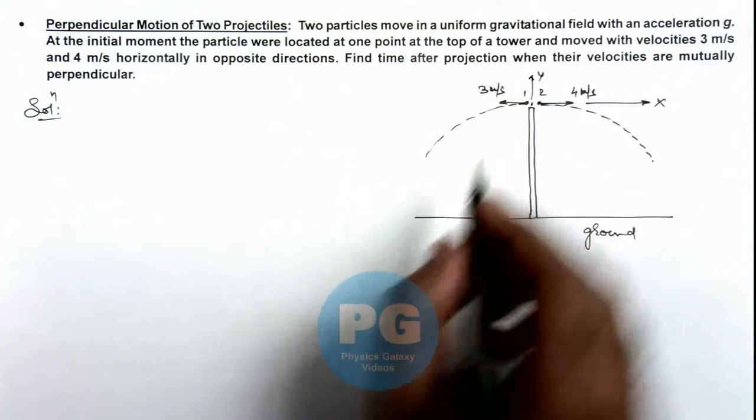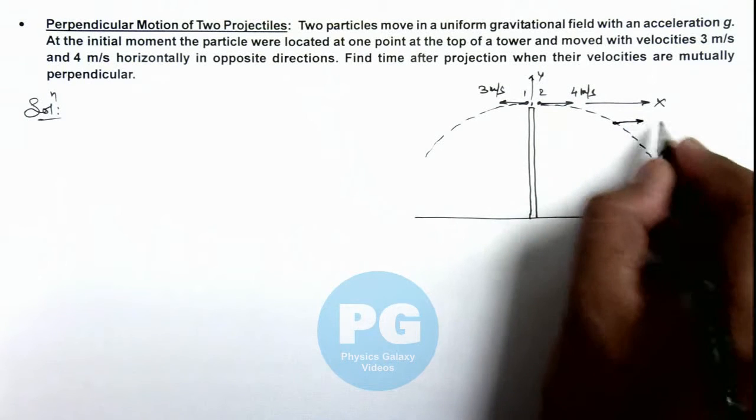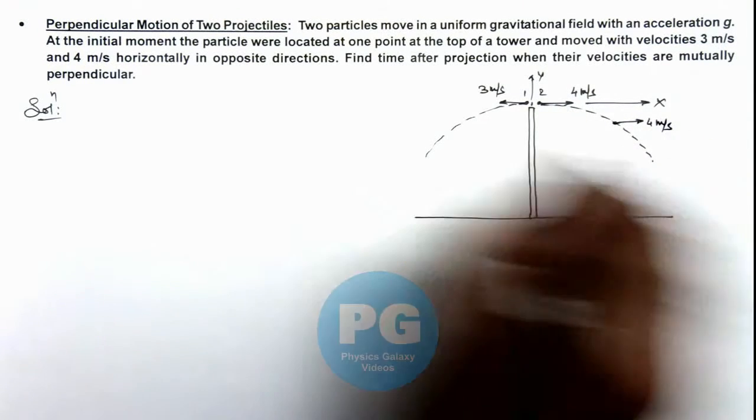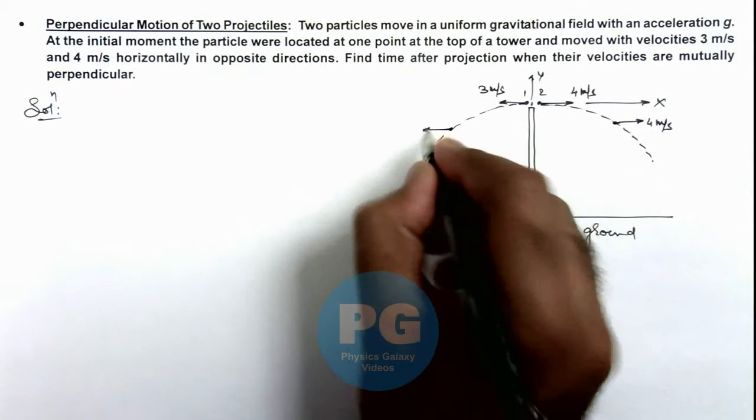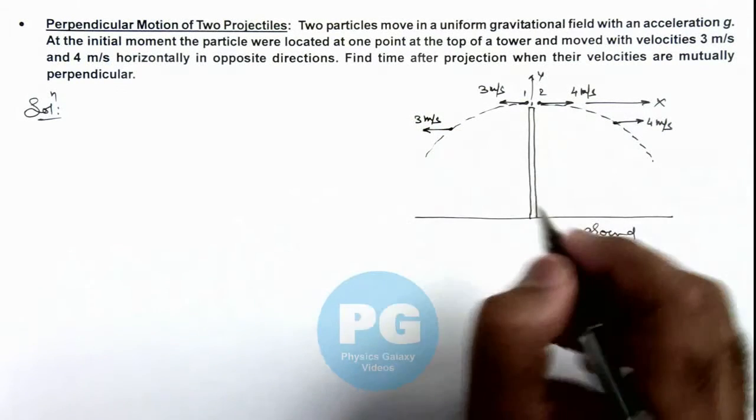Here we can see at all times, the horizontal velocity of particle 2 will remain 4 meters per second and horizontal velocity of 1 will remain 3 meters per second in the same direction at which these are projected.